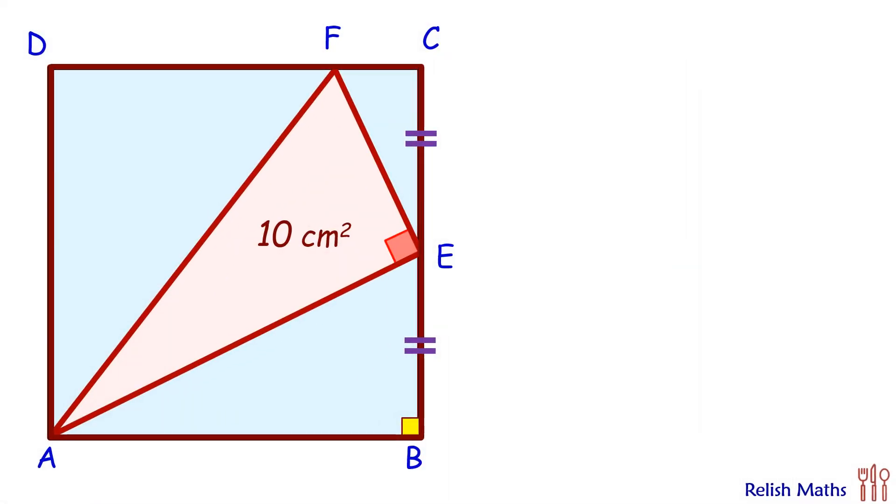Let's check its solution. Let's assume the side of the square is 2A. As E is the midpoint, thus CE will be A and BE will also be A.